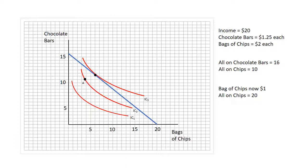With this new budget constraint we intersect indifference curve IC3, and the person increases both the amount of chips and chocolate bars they consume. Chocolate bars goes from 11 to something like 12 and a half, and chips goes from three and three quarters to just about seven.